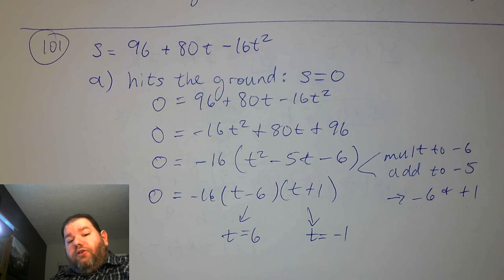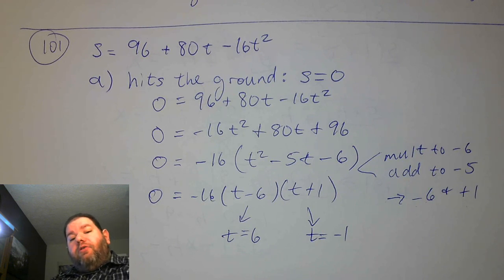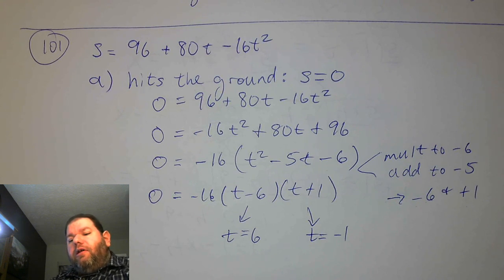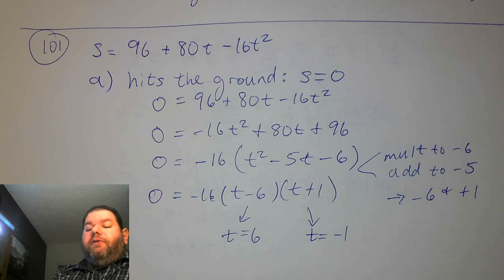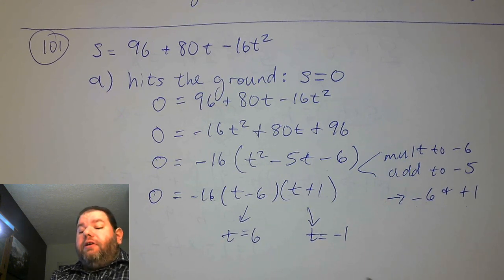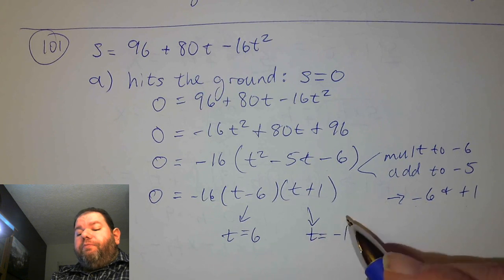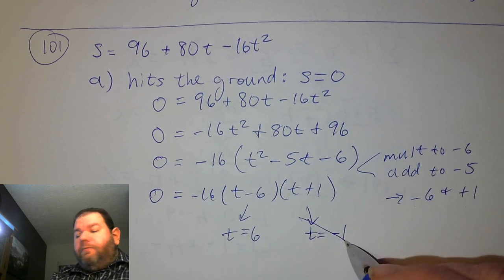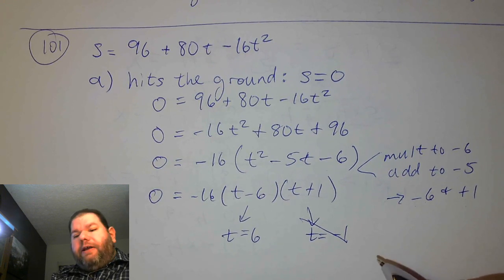We have two solutions, but really only one can be true. t is the amount of seconds elapsed since the ball was thrown. Is it more reasonable to say it took 6 seconds to hit the ground or negative 1 seconds? We can't throw the ball backwards in time, so we eliminate t equals negative 1. It has to be t equals 6 seconds.